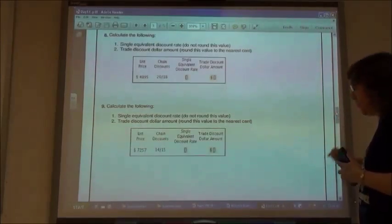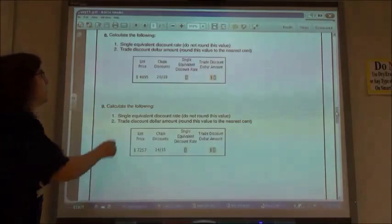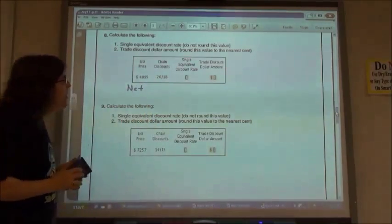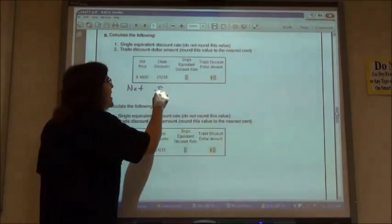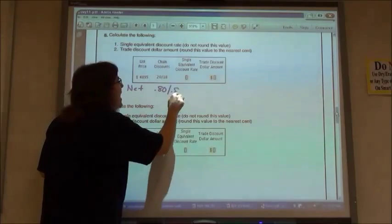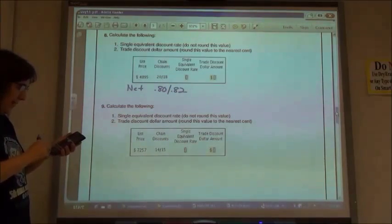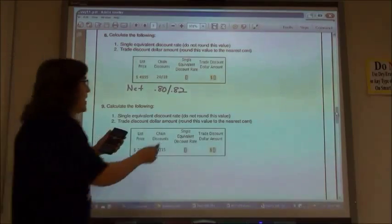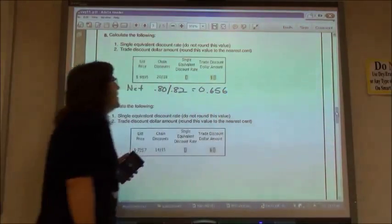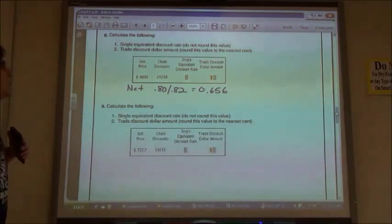So number 8, again, we're calculating the single equivalent discount rate. First of all, we have to figure out the net rate. So if I have a 20% discount, I have to pay 80% of the price. If I have an 18%, I'm paying 82% of the price. So 0.80 times 0.82 gives me 0.656. So my net is 65.6% if I would change it into a percent.